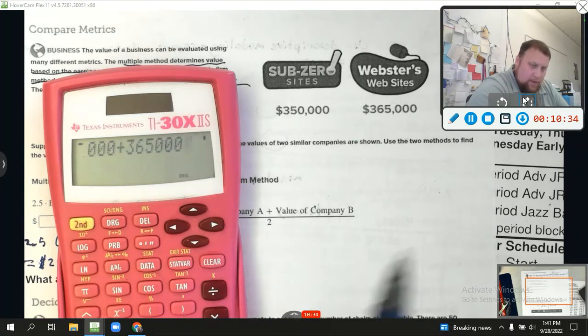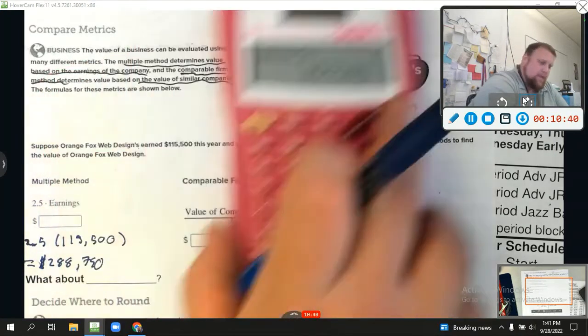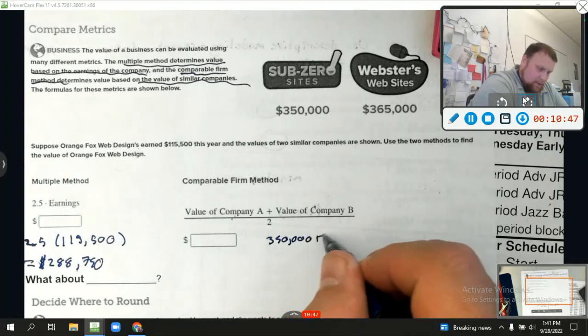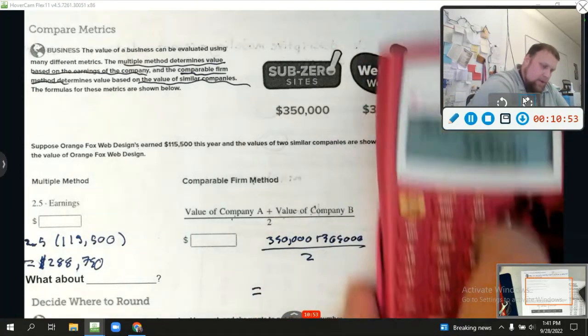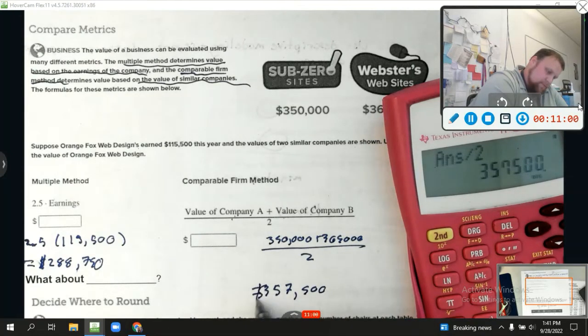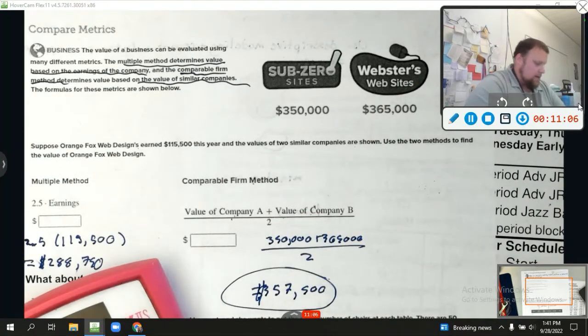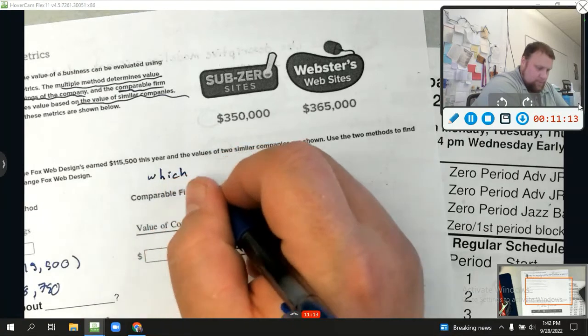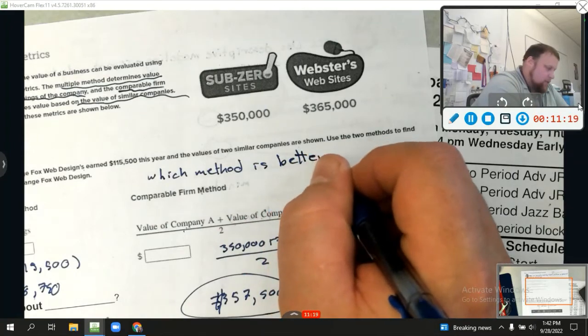So this one gives it quite a bit more value. Now, the question I have for you guys today, I'm going to write this down. Which method is better? And that's not always a straightforward question to answer. It really depends on what you want to show or want to do. For example, the multiple method, what does it actually do? Actually looks at your earnings at the company. So it actually looks at the company. It's not looking at other companies. It's actually looking at your company. What else does it do?